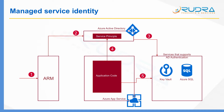For that service principal, you provide access to different Azure services such as Key Vault or Azure SQL. Once you have provided that access, from within the application code you can authenticate against Azure Active Directory and get a token. By presenting the token to services like Key Vault or Azure SQL, you can access those resources. For example, if you want to access a secret from Azure Key Vault, with a proper access policy defined, your application code can retrieve the secret at runtime and use it to access an on-premise resource.